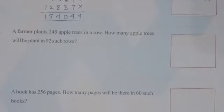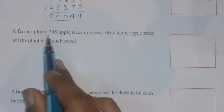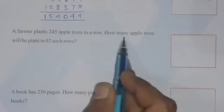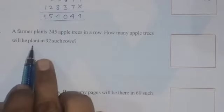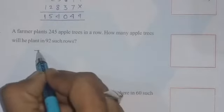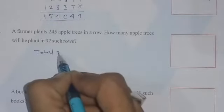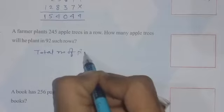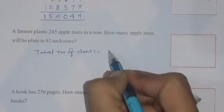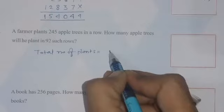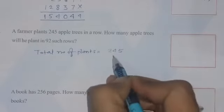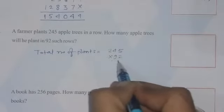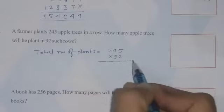Question number second is: A farmer plants 245 apple trees in a row. How many apple trees will he plant in 92 such rows? So total number of plants equals to, and what we have to do, we have to multiply 245 by 92. And on multiply by this number, we will get the answer.